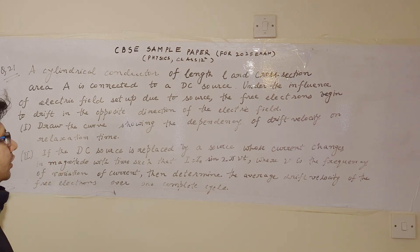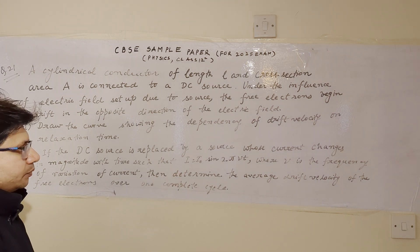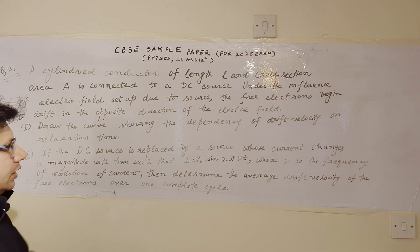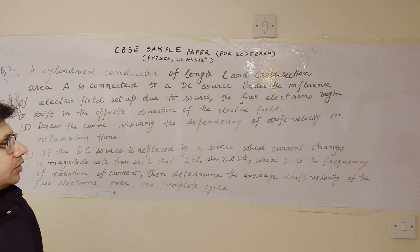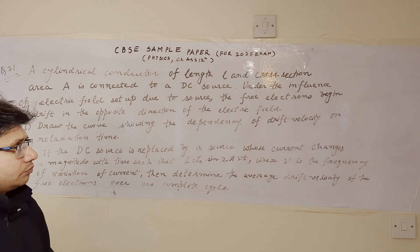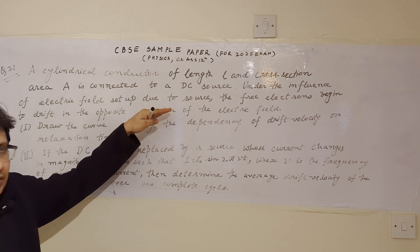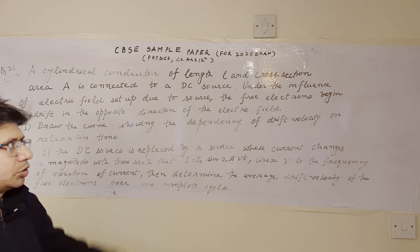Part 1: draw the graph showing the dependency of drift velocity on relaxation time. And Part 2: if the DC source is replaced by a source whose current changes in magnitude with time such that I equals Y₀ sin(2πνt), where ν is the frequency of variation of current, then determine the average drift velocity of the free electrons over one complete cycle. The problem is based on current electricity, specifically the relationship between drift velocity and relaxation time. In the first case, the applied signal is DC, and in the second case, it is AC.